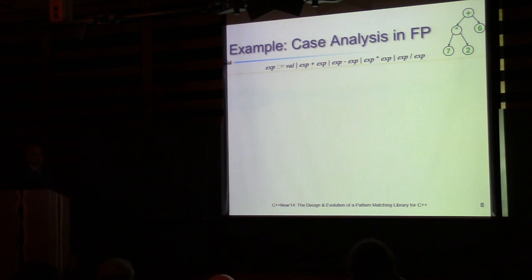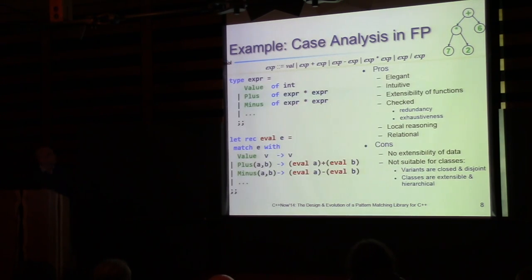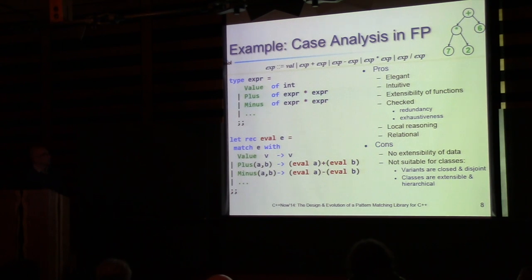Pattern matching became most popular because of what's called tree or constructor patterns, which are directly related to algebraic data types. Imagine writing a simple calculator for a language given by a simple grammar. In functional languages, a term in this language is typically represented with a recursive algebraic data type with variants corresponding to productions. Importantly, the variants are disjoint — their sets of values don't intersect — and the entire algebraic data type is closed.